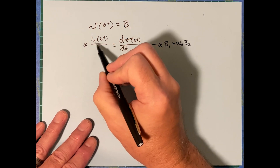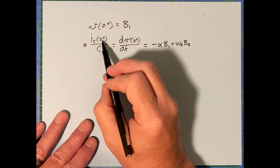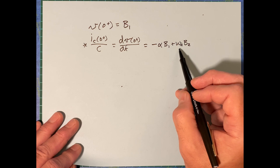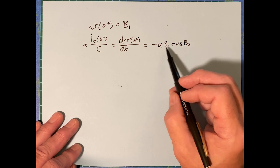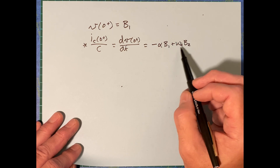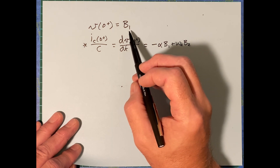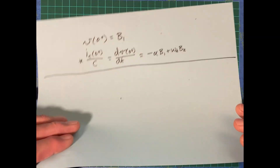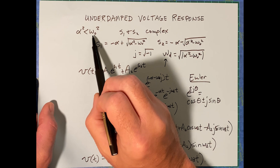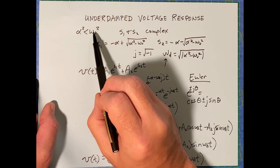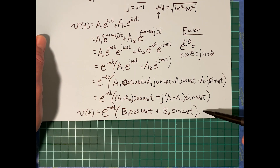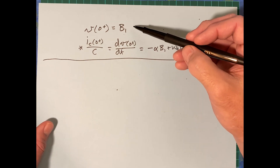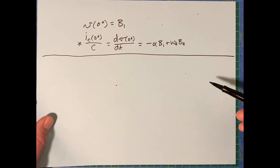The current iC(0+) will either be given or you'll have enough information to figure it out. C should be given, and alpha and omega sub D are computable once you know the R, L, and C values. Using those two equations together, you can solve for coefficients B1 and B2. You approach a parallel RLC circuit problem by computing alpha squared and omega naught squared, doing the comparison, and if alpha squared is less than omega naught squared, that's the underdamped case.